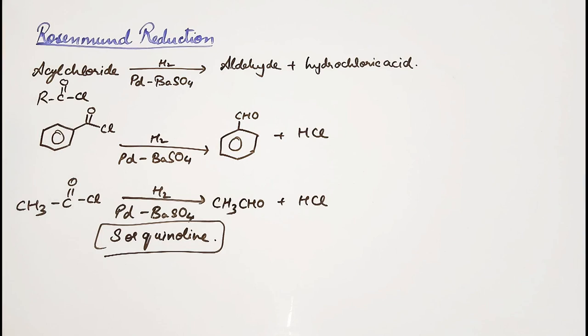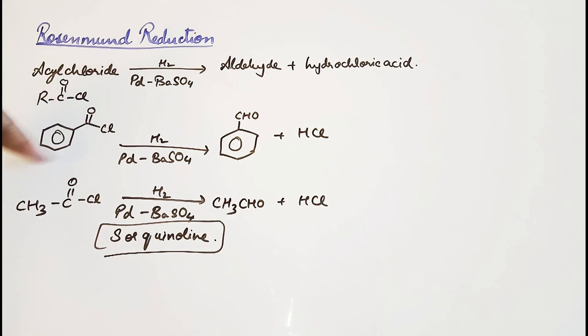So the Rosenmund reduction is a reduction reaction where an acyl chloride undergoes reduction in the presence of palladium and barium sulfate as the catalyst to form an aldehyde and hydrochloric acid. We've had two examples: one where this is an aryl group, here it's an alkyl group. We are adding sulfur or quinoline as a poison.